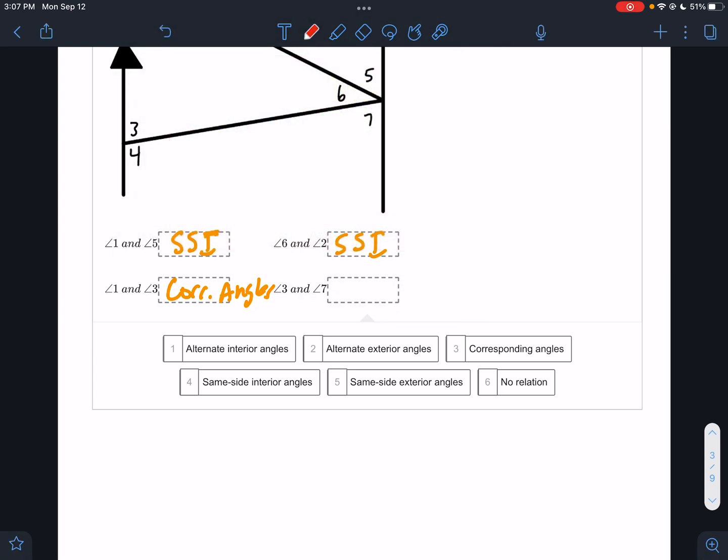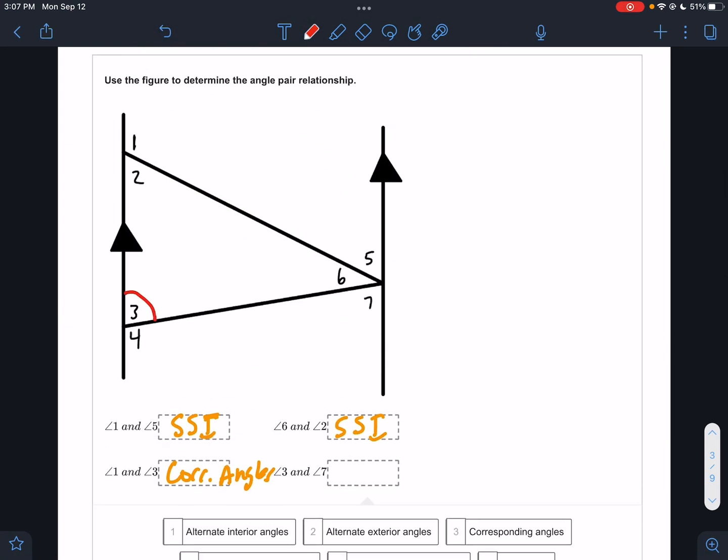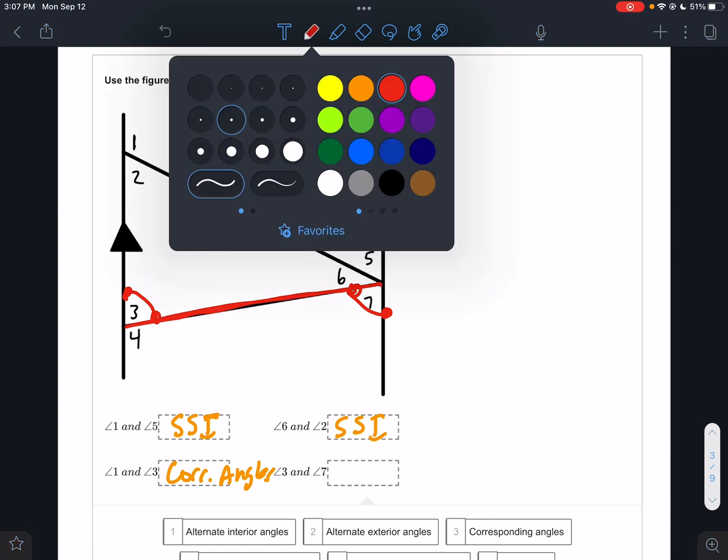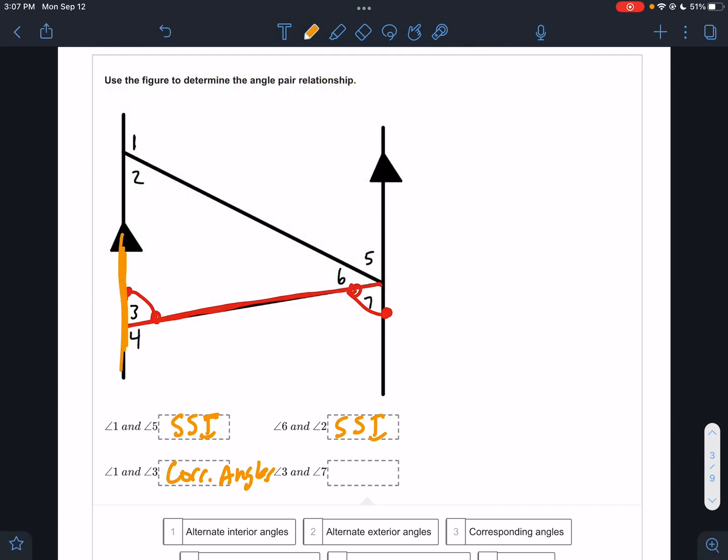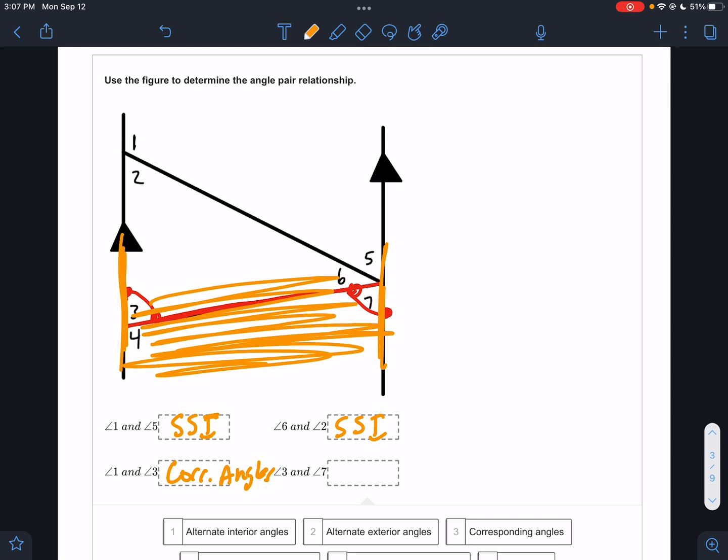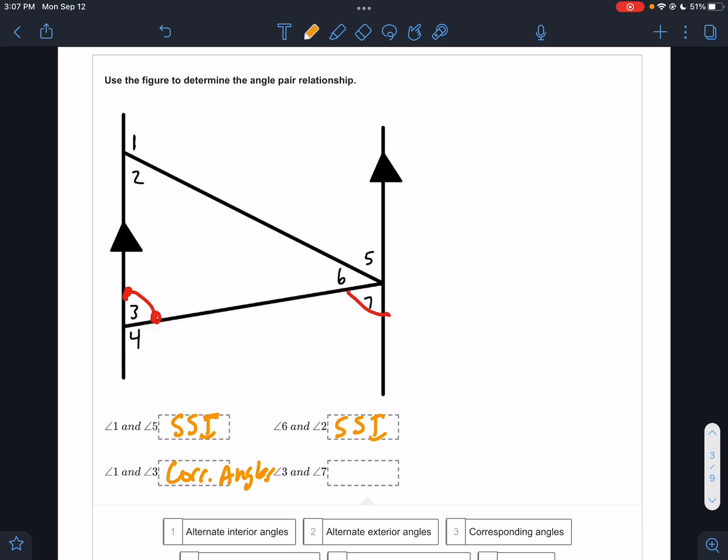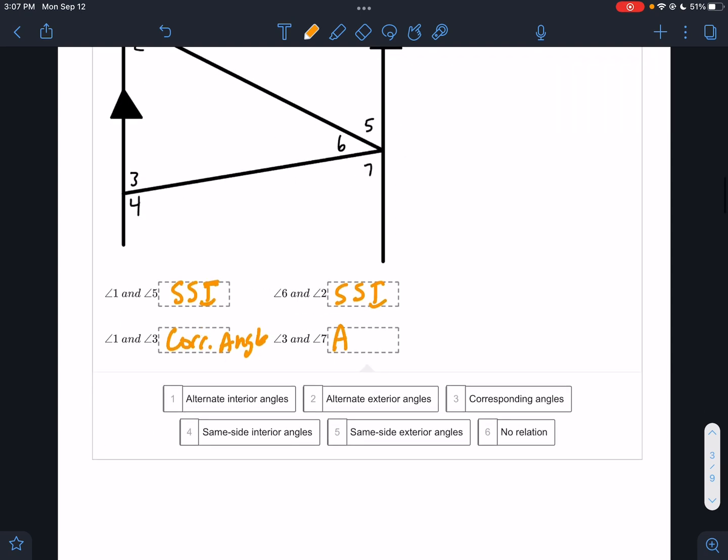And then the last group, angle 3 and 7. If I trace angle 3 and I trace angle 7, this is the line that they have in common, so that's the transversal. So I know it's alternating. They're on different sides of the transversal. Here's the other line for 3, here's the other line for 7. Where are 3 and 7? They are both in between the other two lines. So it is alternating interior angles.